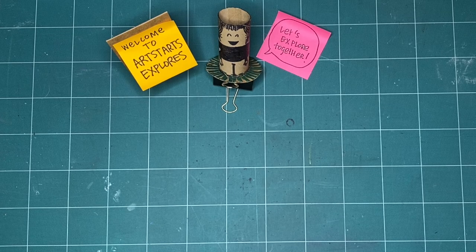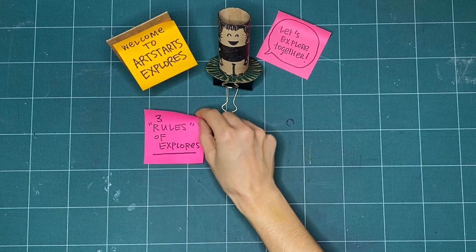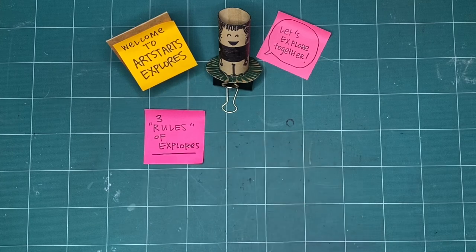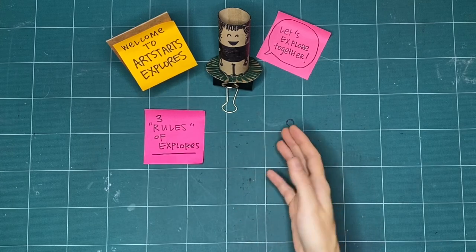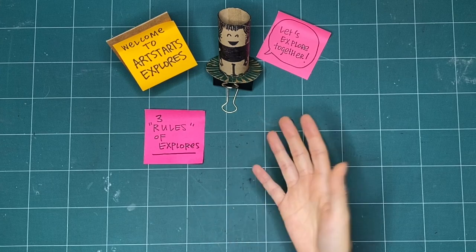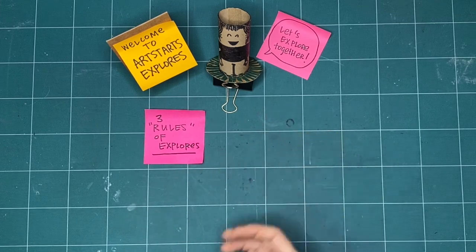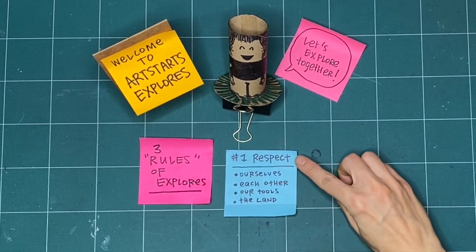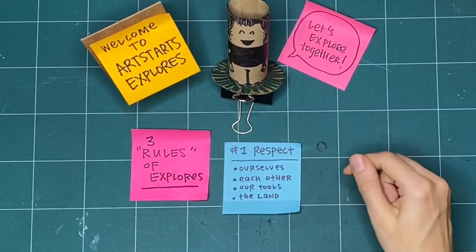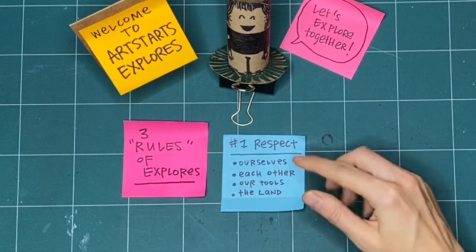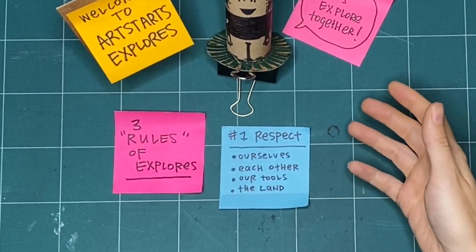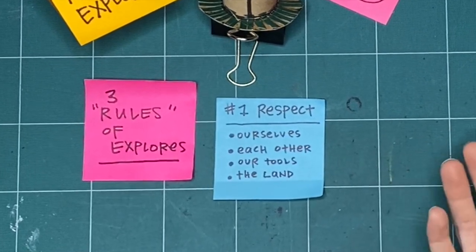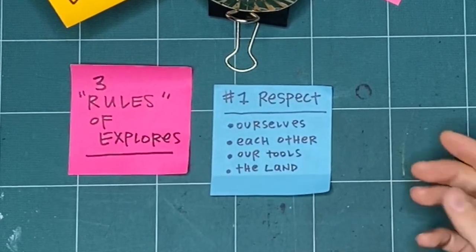Before we begin making, let's review the three rules of Explores. We've got rules in quotes here because they're less rules and more like guidelines or things that we like to have in mind before we start making together. First is respect. We practice respect for ourselves by checking in with ourselves every day before we start making. Maybe we didn't have a good night's sleep, or we're feeling really good today. Whatever it is, we want to take the time to check in with ourselves.